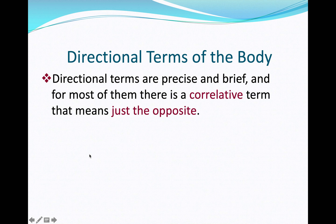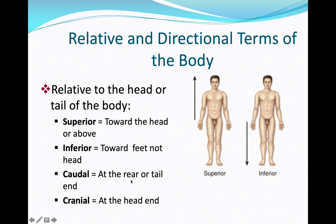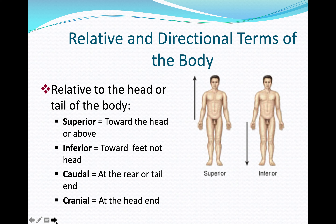Anatomical terms are precise and brief, and most have a correlative opposite term. Anterior means toward the front surface; posterior means toward the back side. Dorsal refers to the back side, while ventral refers to the front side — these terms are most commonly used in animal anatomy.